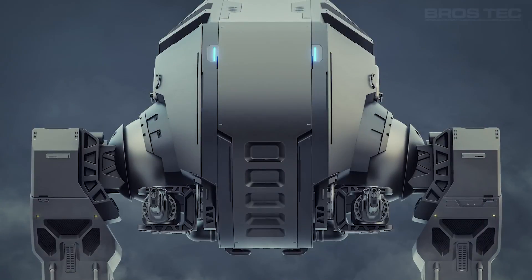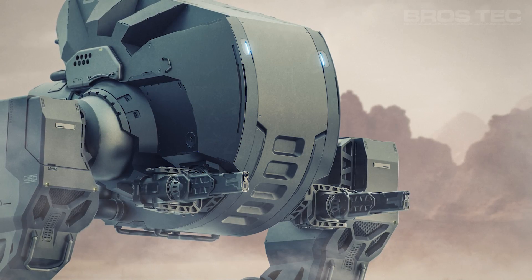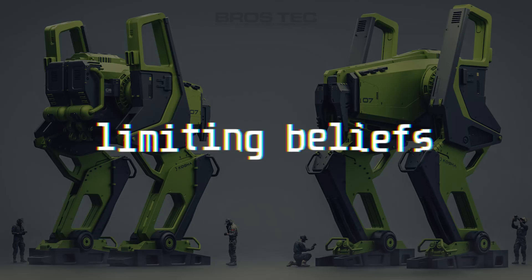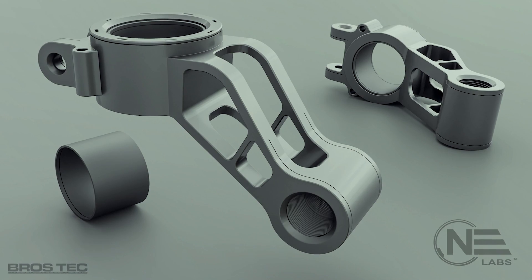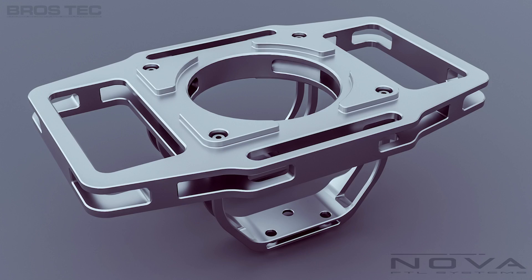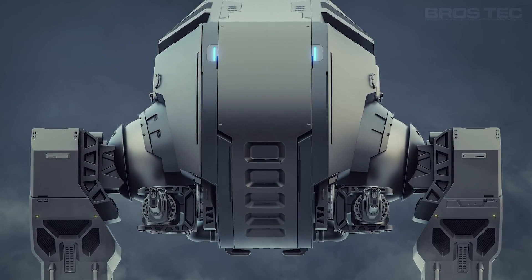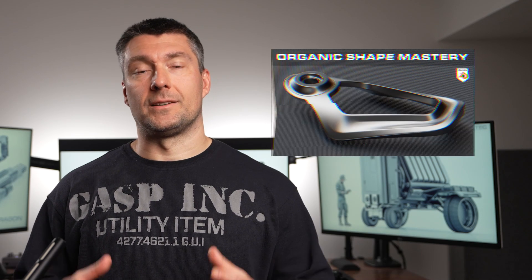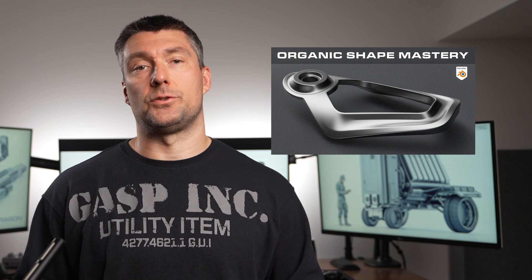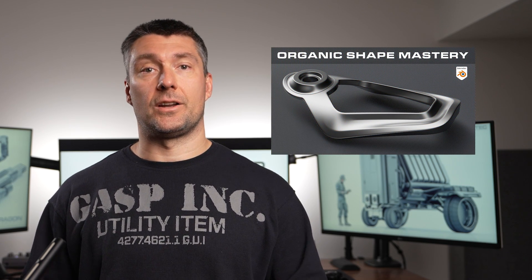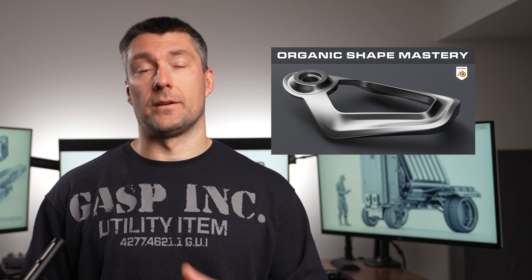Have you ever looked at a complex 3D design and thought, this is impossible to model? Well, it's just a limiting belief. Every mech or truck is made of smaller and much simpler parts. Build the parts, put them together and you've got yourself a complex model. Every time you create a simple hard surface shape, you get closer to building that sick mech you always wanted to add to your portfolio. Let's go.